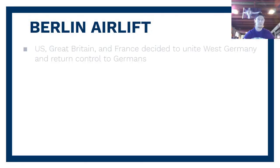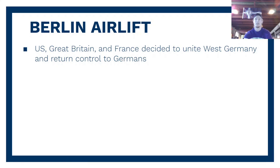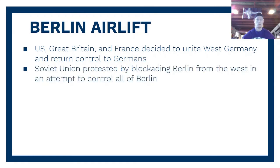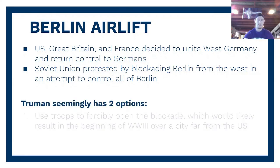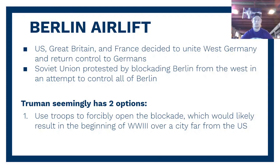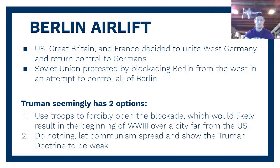The third example is the Berlin Airlift. The United States, Great Britain, and France decided to unite West Germany and return control to the Germans under supervision, helping set up a democratic government. The Soviet Union did not support this idea and protested by blockading Berlin from the West, attempting to control all of Berlin. Truman had two options: use troops to forcibly open the blockade — which would likely start World War III — or do nothing, letting communism spread and showing the Truman Doctrine was just words, not action.